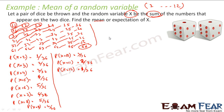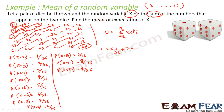So mu is nothing but sigma xi times pi, where i goes from 2 to 12. We put in the values: i=2 times p(2) which is 1/36, plus i=3 times p(3) which is 2/36, plus i=4 times p(4) which is 3/36.